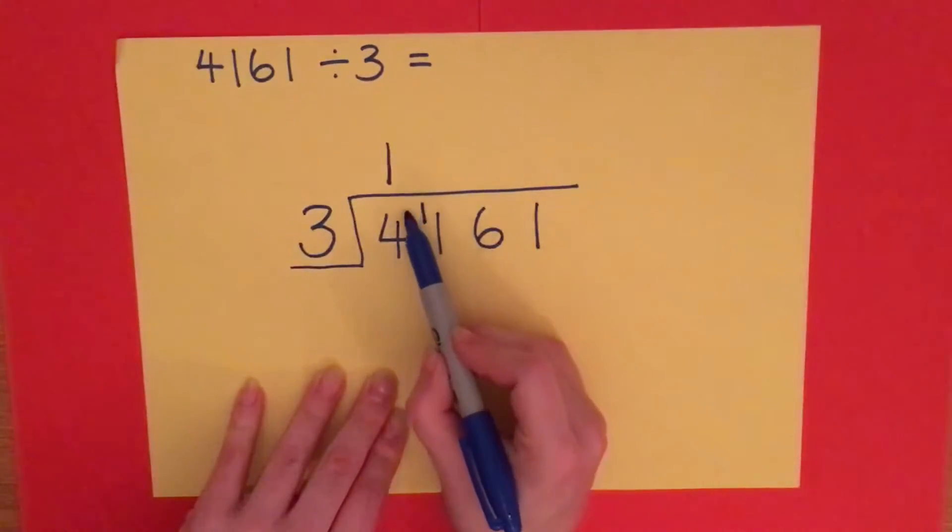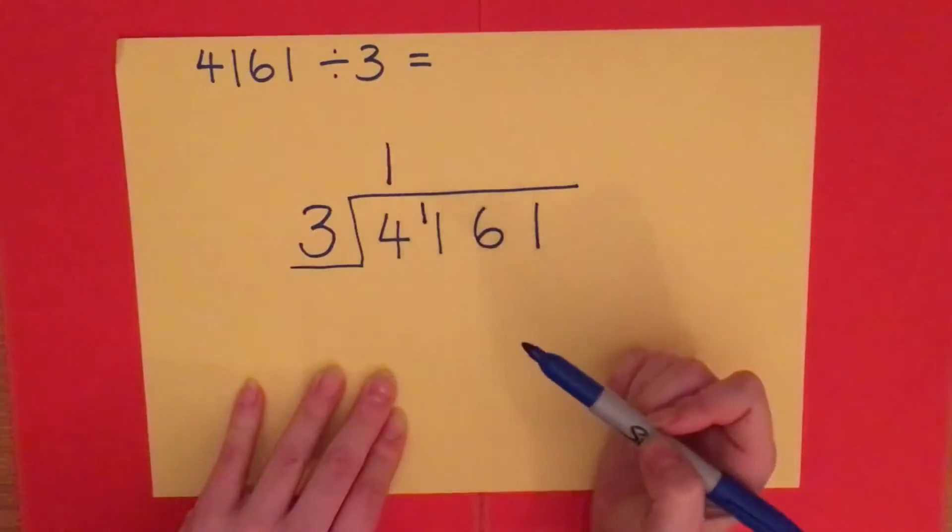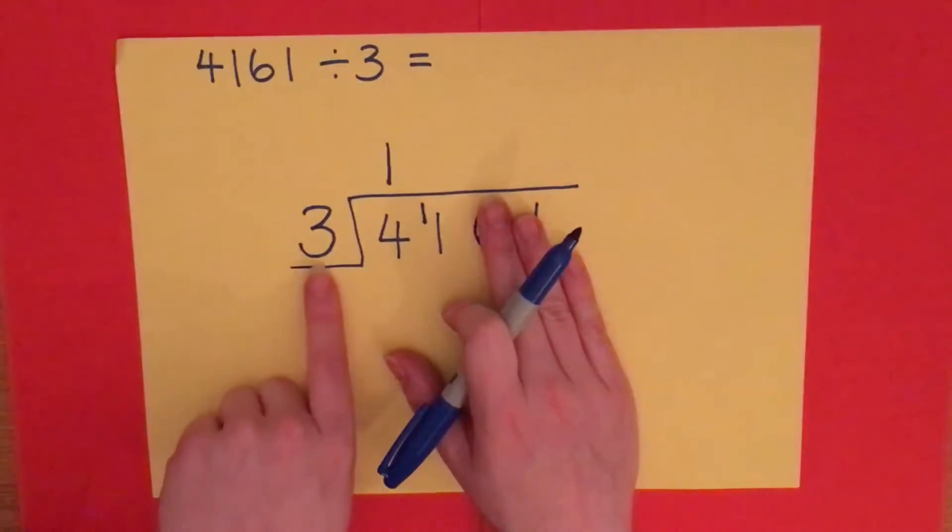So we've now made this 1 become a 10 and a 1, so it now becomes an 11. We're now going to forget about that 61 at the end and have a look at how many threes make 11.